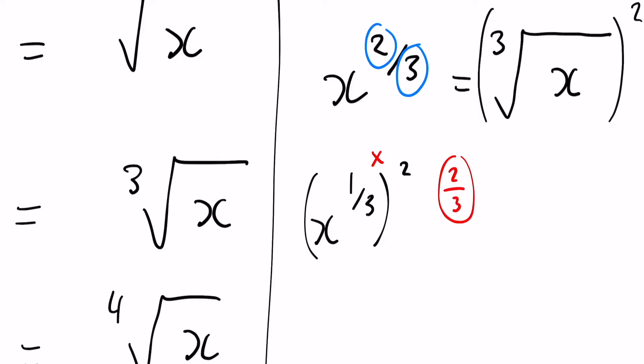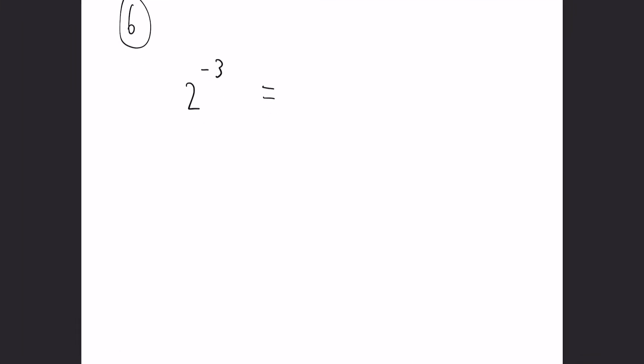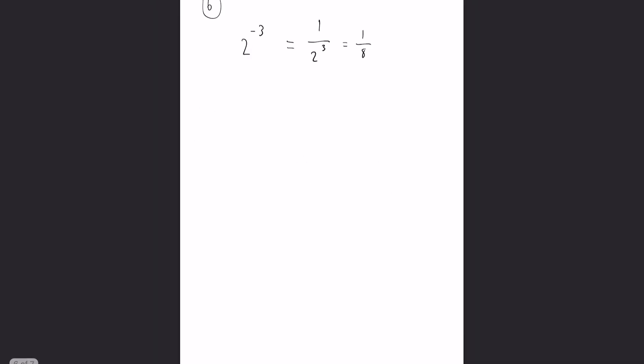Okay and finally what if we get a negative power? Now negative powers are slightly more involved but all we have to do first of all is to get rid of the negative, and to do that we say we do one over two to the power, so one over two to the three. In this case it's going to be one over eight.